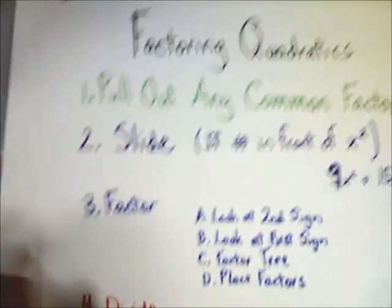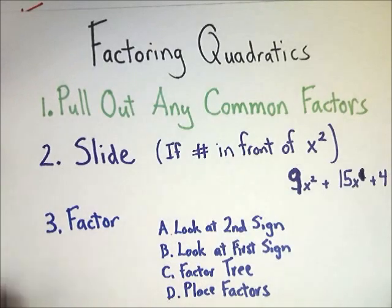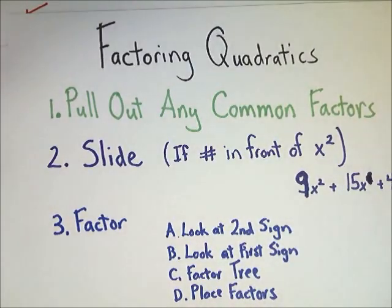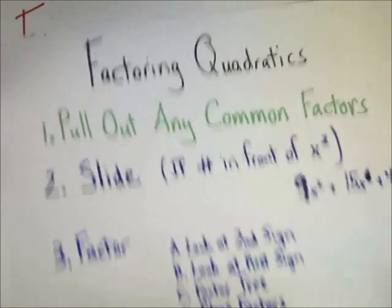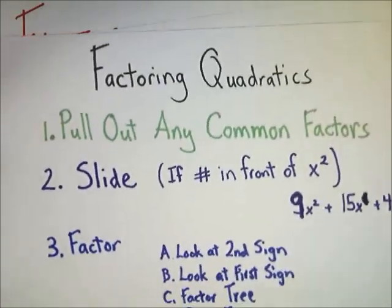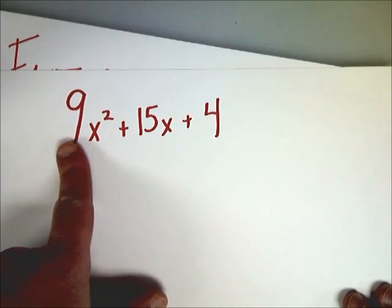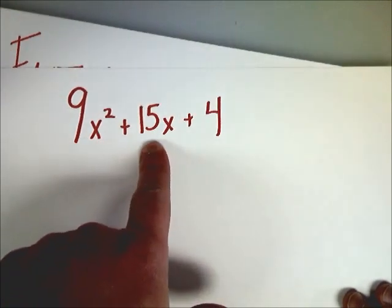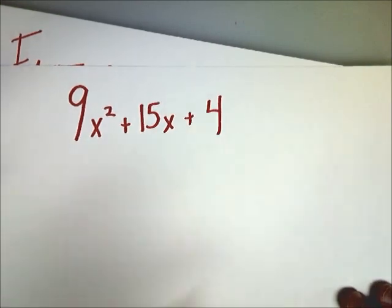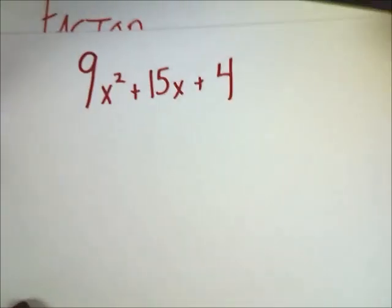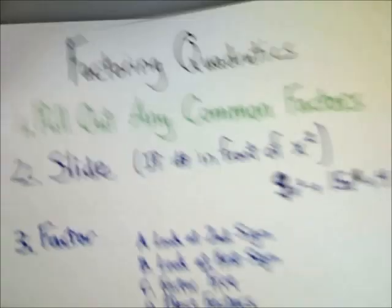The first thing that I need to do when I'm factoring quadratic expressions is pull out any common factors. So if a number goes into all three of the terms, pull out any common factors. I'm going to look at my paper here. I know that three goes into nine and 15 also has three as a factor, but four, no. So this one's pretty good. It's as far down as it can go. I don't have to pull out any common factors.